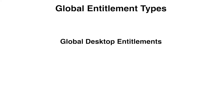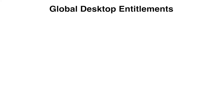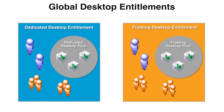There are two types of global entitlements: global desktop entitlements and global application entitlements. A global desktop entitlement contains users and groups that share the global entitlement and desktop pools that can provide desktops for the entitled users. The desktop pools can be floating pools or dedicated pools.